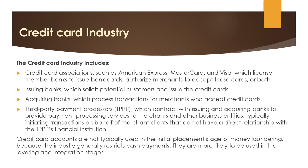For example, money launderer Josh prepares his credit card using illicit funds already introduced into the banking system, creating a credit balance on his account. Josh then requests a credit refund, which enables him to further obscure the origin of funds — this constitutes layering. Josh then uses the illicit money placed in his bank account and the credit card refund to pay for a new kitchen, integrating his illicit funds into the financial system.